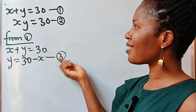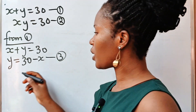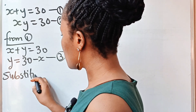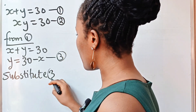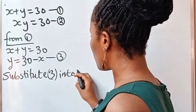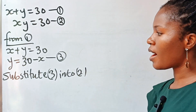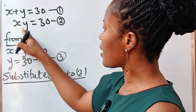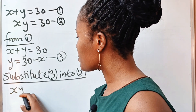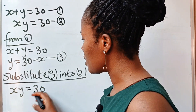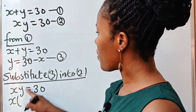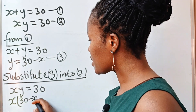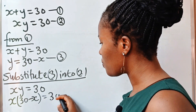Now let's substitute equation 3 into equation 2. So if we do that, we have x times y is equal to 30. So x multiplied by — remember that y is 30 minus x — so x times (30 minus x) is equal to 30.